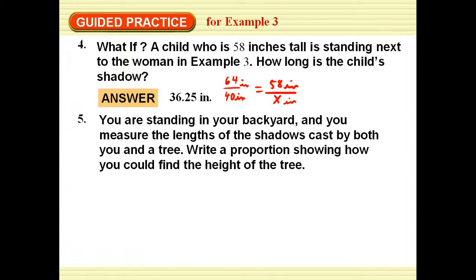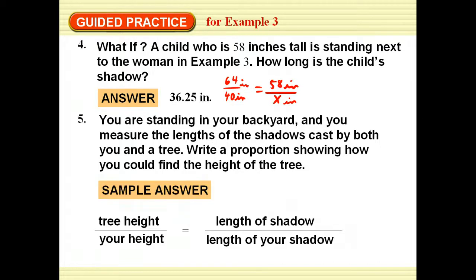Remember, guided practice, you should try this before I actually do it, so you can pause the video and try it. If you're standing in your backyard and you measure the length of the shadow cast by both you and a tree, write a proportion showing how you could find the height of the tree. Remember that the height of the tree compared to its shadow has to be equal to your height compared to your shadow. So the tree height and your height, the length of the tree's shadow, and the length of your shadow.